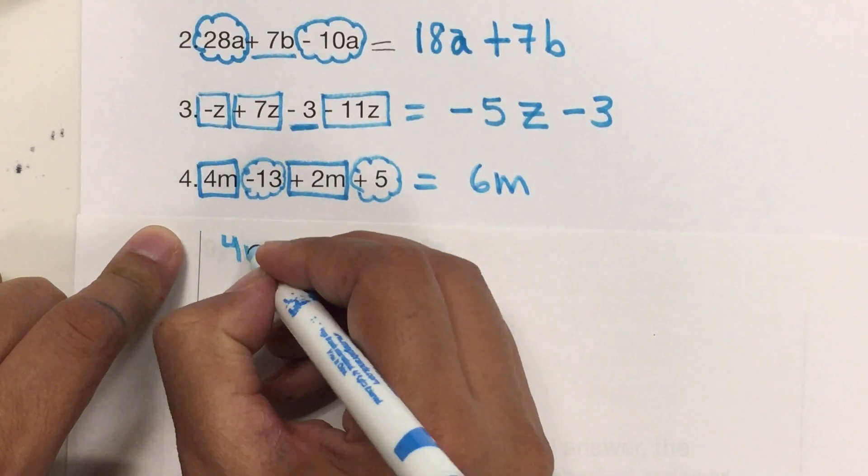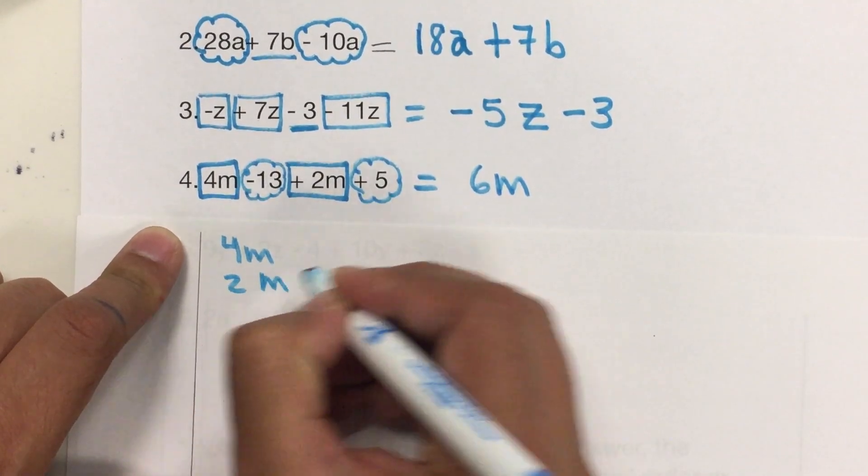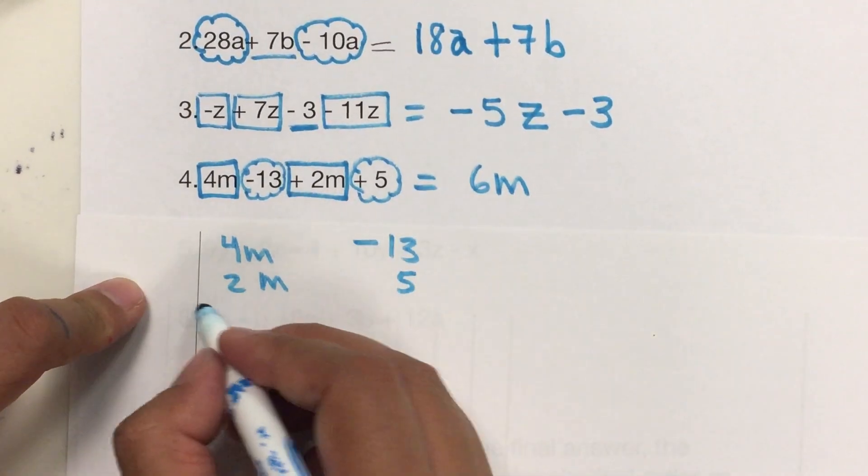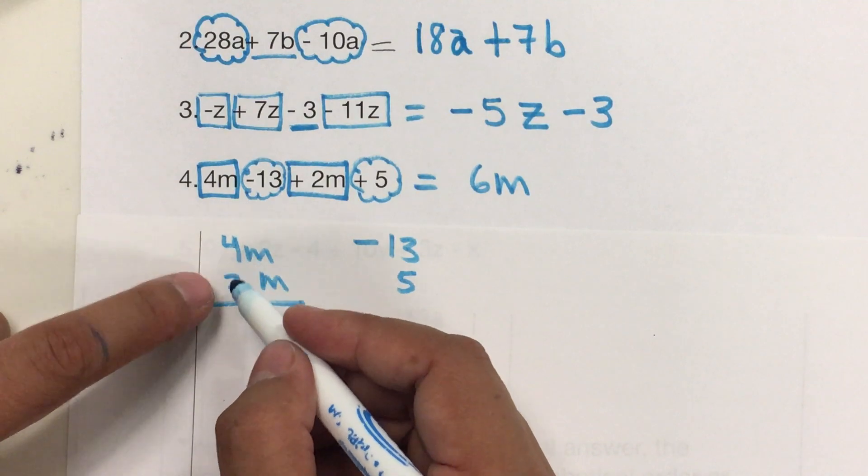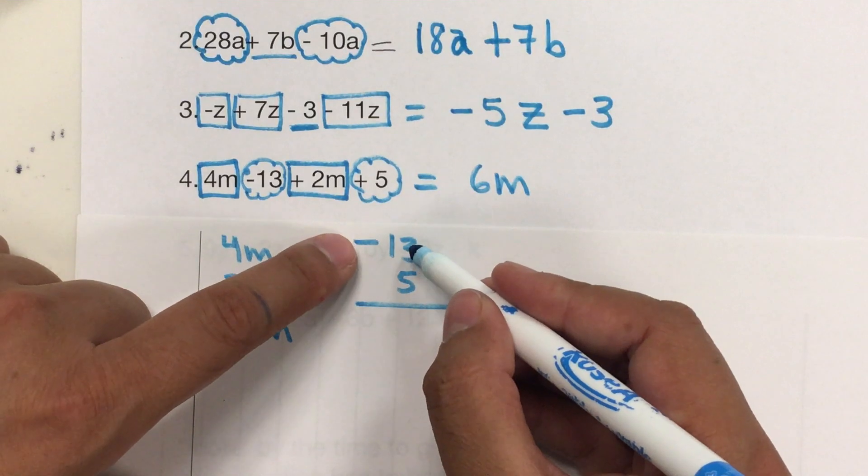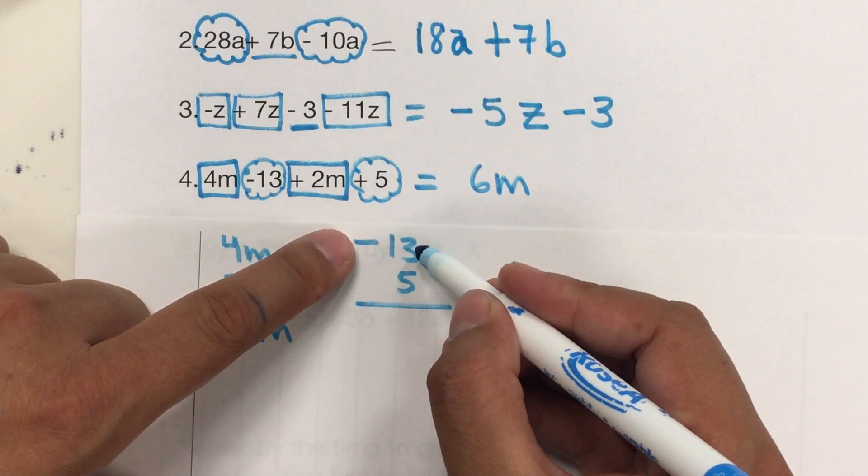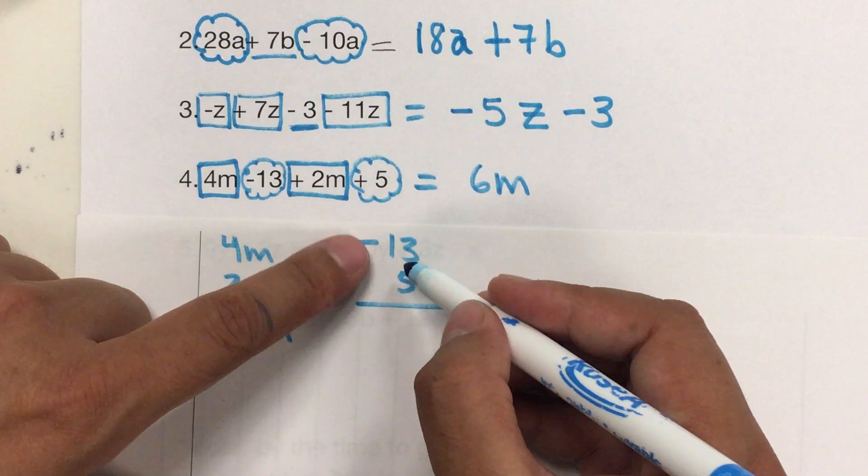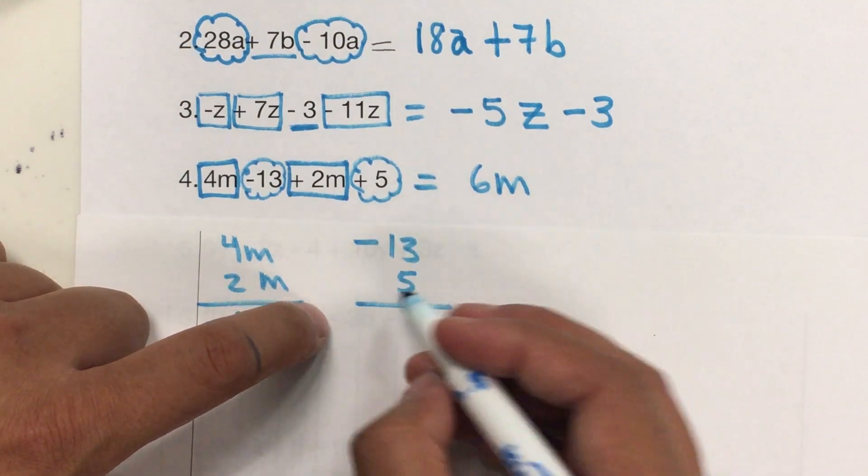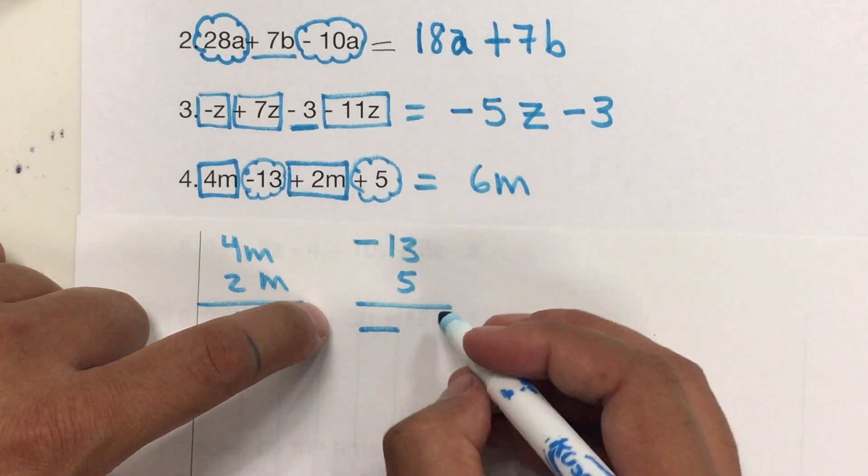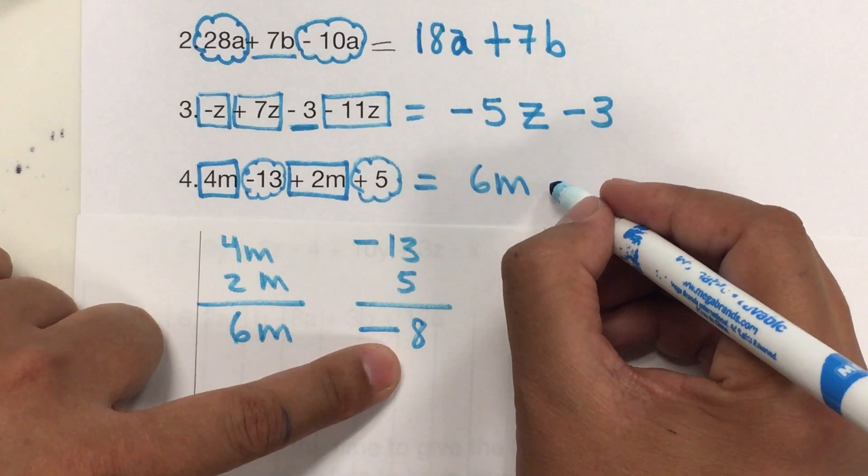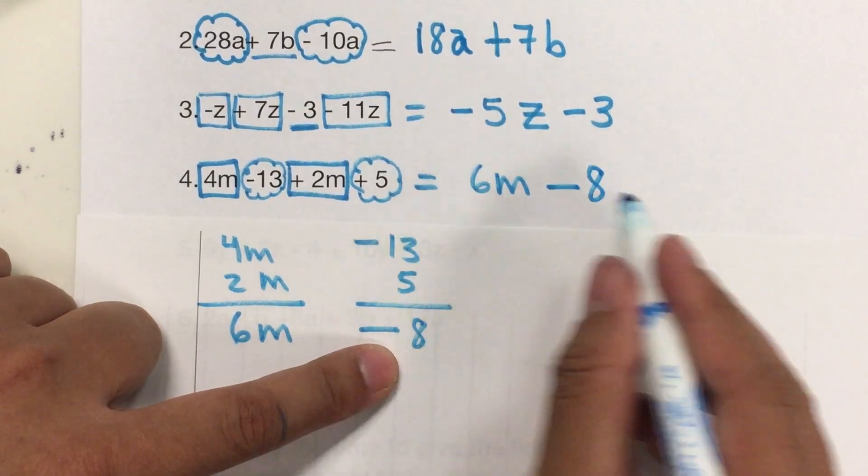4m and 2m equals 6m. Some people prefer to do 4m and 2m. And then they have negative 13 and positive 5. So, they say, I have 4 and I have 2. That means I have 6m. And then in here, I owe 13 and I have 5. So, different signs we subtract and leave the sign of the bigger one. So, it's going to be negative. And 13 minus 5 is 8. So, I'm going to put the negative 8 in here. So, that's going to be my answer.